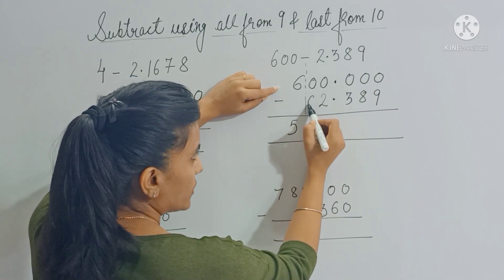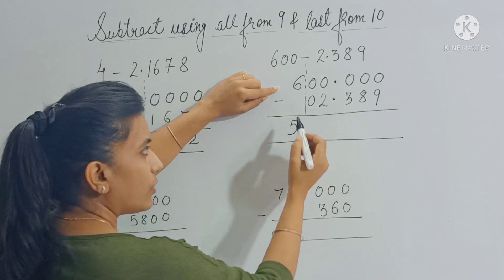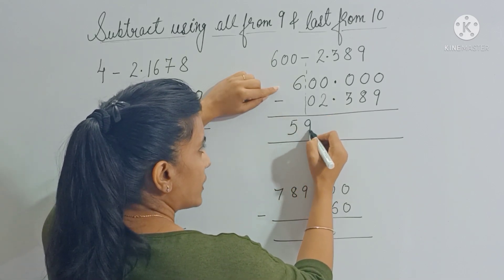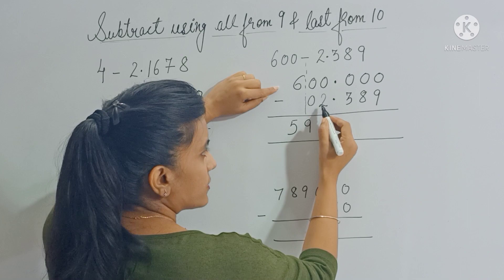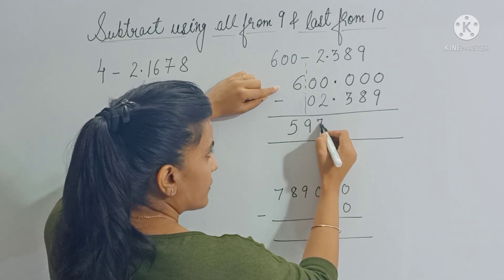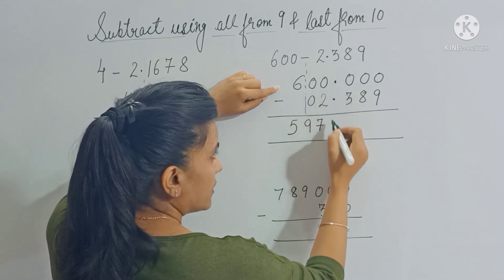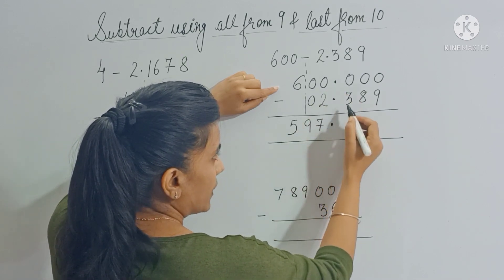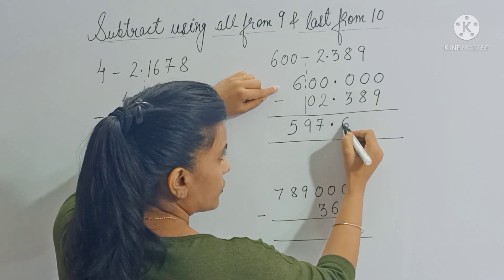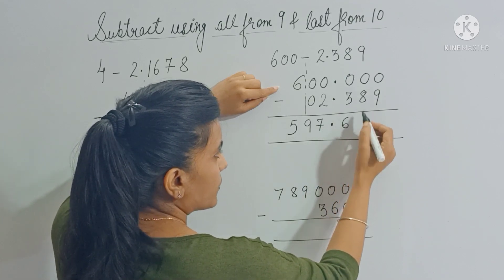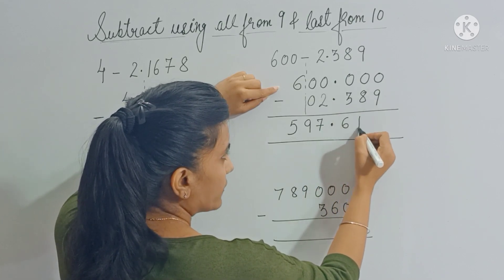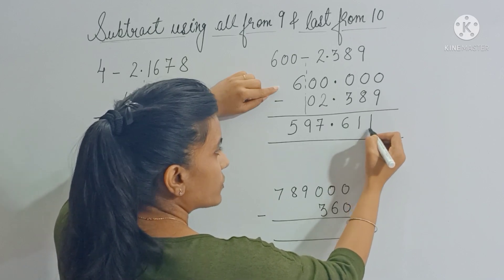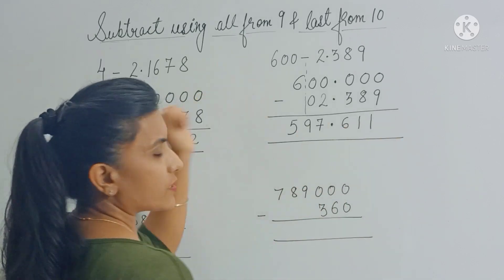Place a 0 there. So 0 plus 9 gives you 9, 2 plus 7 gives you 9. Place the decimal here. Then 3 plus 6 gives you 9, 8 plus 1 gives you 9, and 9 plus 1 gives you 10. So this is your answer.